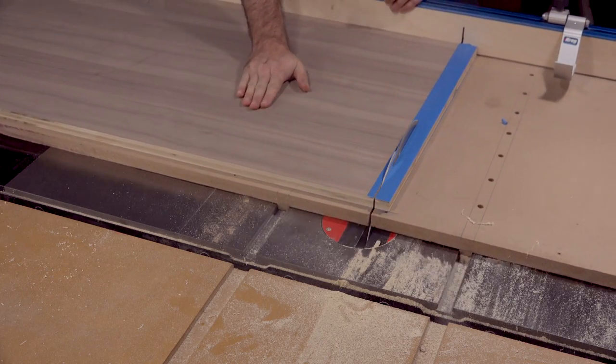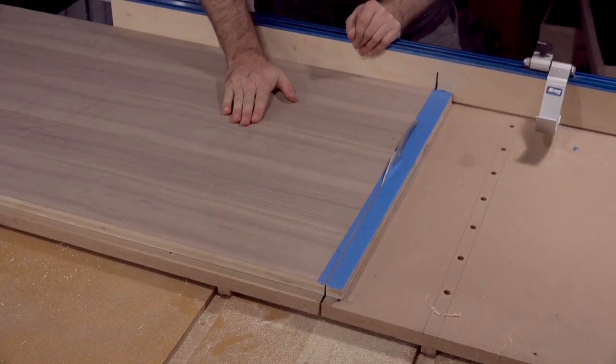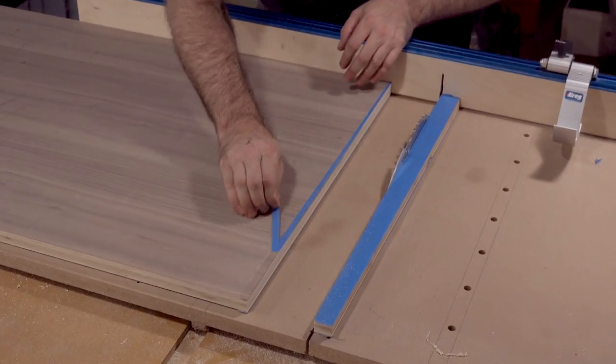Tear out tends to happen more so on the bottom side, but I like to play it safe and cover both sides before running it through the saw.